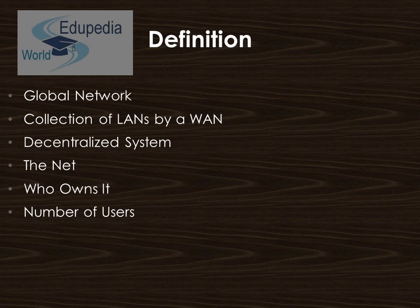No one actually owns the internet, and no single organization or person controls the internet in its entirety, though governing bodies and telecommunication companies do own and operate the links that carry all the information being exchanged between computers. According to internet life stats, the number of internet users represents more than 40 percent of the world's population. The largest number of internet users by country is China, followed by the United States and India, and this number is increasing day by day.